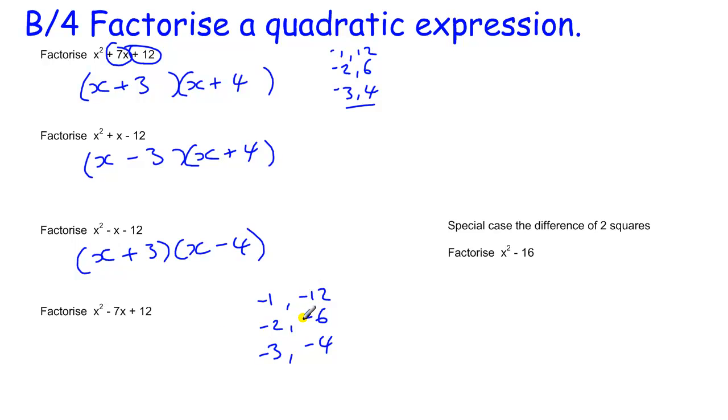And then when we add them together, if I had minus 13 here, it would be this pair. If I had minus 8, because when I add them, I get minus 8, it would be that pair, 2 and 6. And because it's minus 7, it's minus 3. It's x minus 3 and x minus 4.